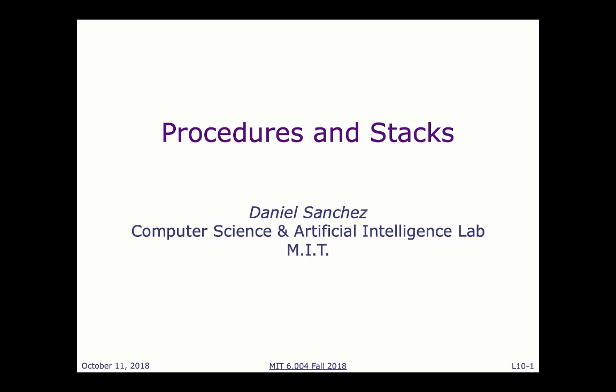In the last lecture, we shifted gears from combinational and sequential logic and started discussing programmable architectures — in particular, the RISC-V instruction set architecture. As Silvina described, an ISA specifies both the set of storage locations in your machine — in RISC-V, registers and memory — and the set of instructions that let you manipulate and process data. We saw computational instructions, loads and stores, and control instructions.